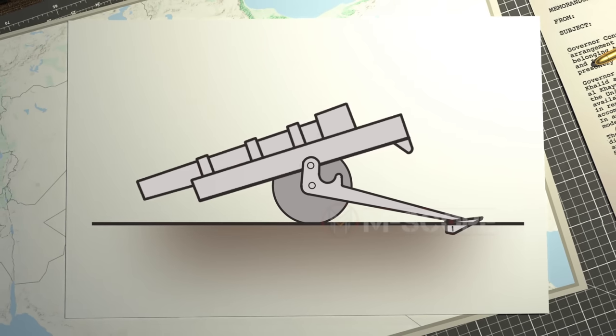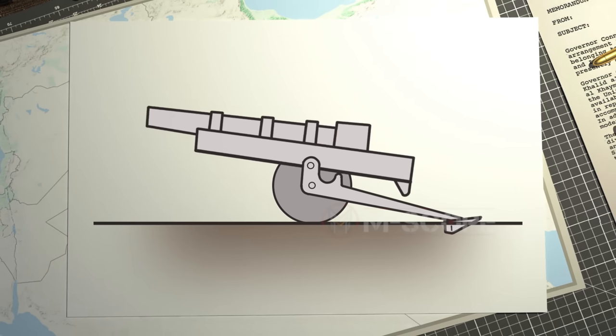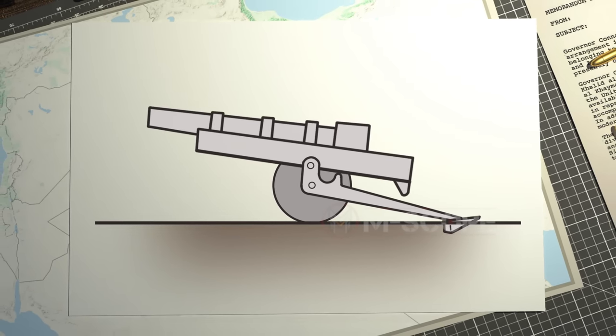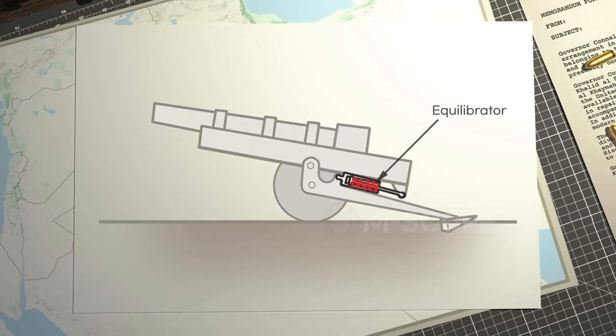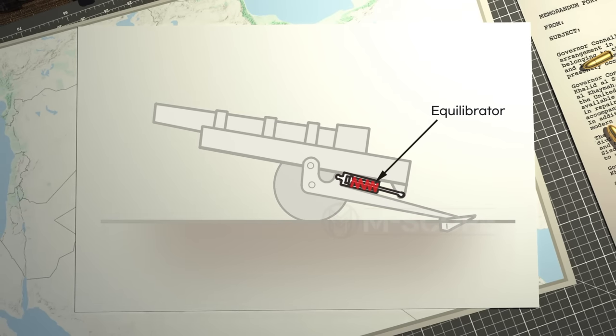However, as the cannon tilts, more power and energy are required. That is why it is relatively easier to maintain balance with little power only at high angle than at low angle. Using a device called the Equilibrator, you can keep the balance of the cannon steady.